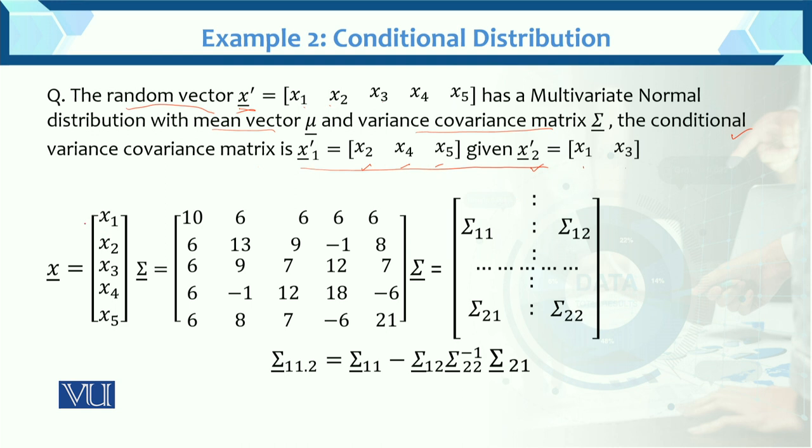So this is x and this is the variance-covariance matrix Σ. The variance-covariance matrix is 5 by 5, and you have 5 random variables.